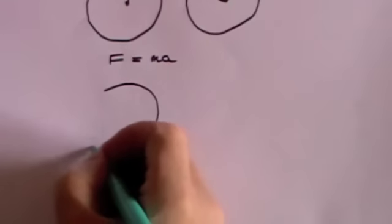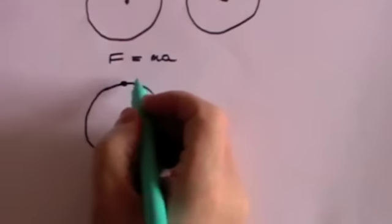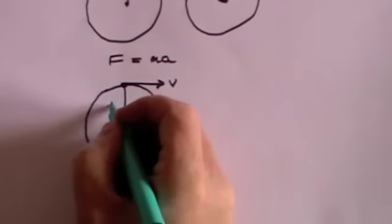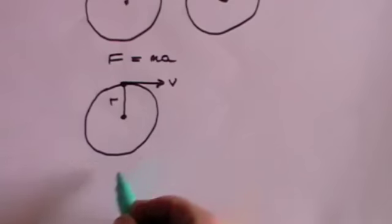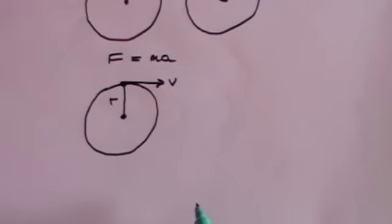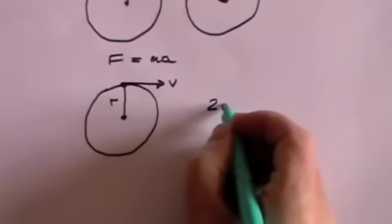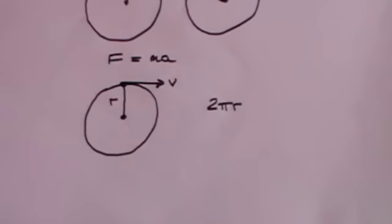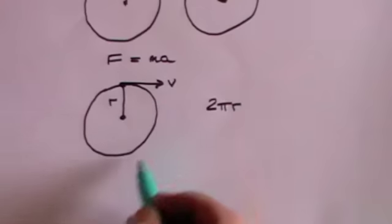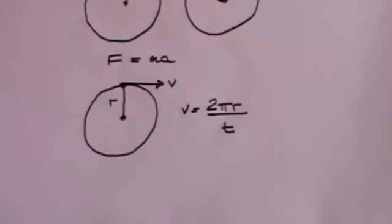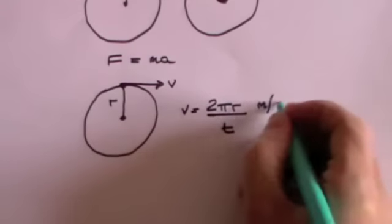It's relatively easy to calculate the orbital speed of the object as it goes round in a circle. If the speed is V and the radius of the circle is R, the total distance travelled in one cycle is 2πR — simply the circumference of the circle. If it does that journey in t seconds, then the velocity V equals the distance divided by the time: 2πR divided by t, measured in metres per second.